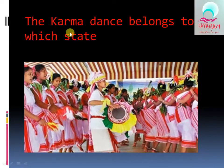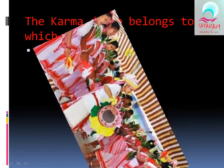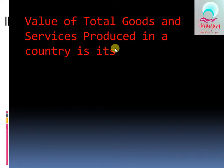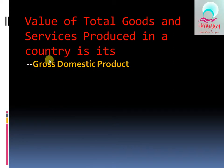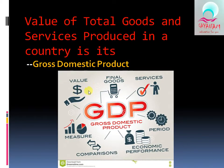Karma dance belongs to which state? GDP means the value of total goods and services produced in a country. This means the gross domestic product, GDP — the value of all financial goods and services produced in a country.